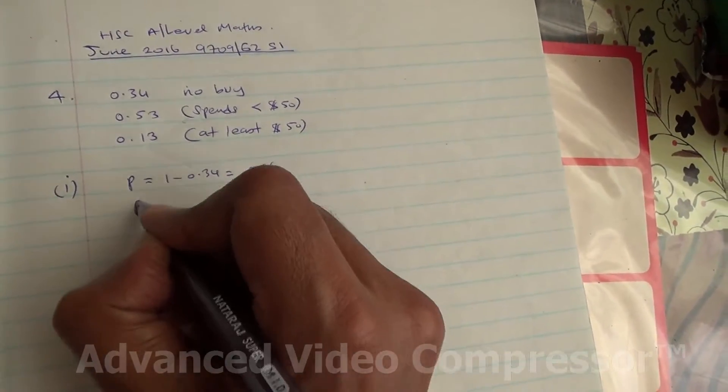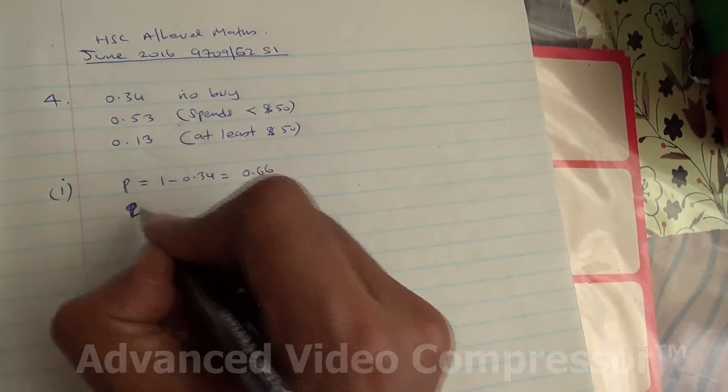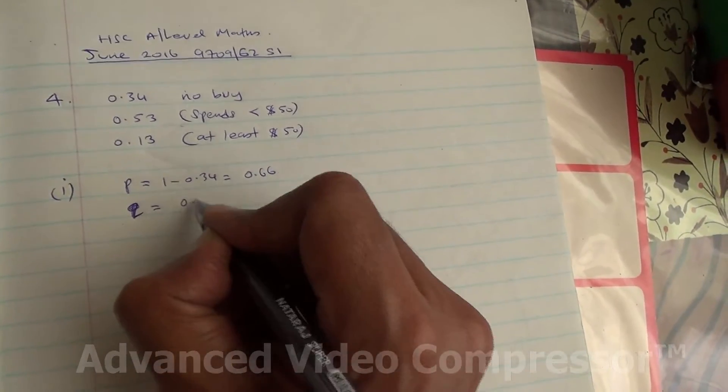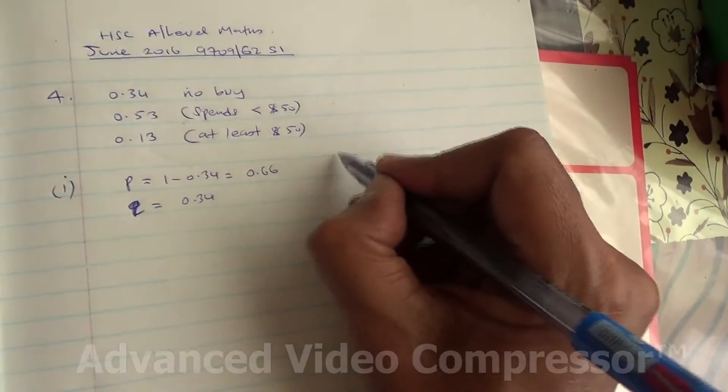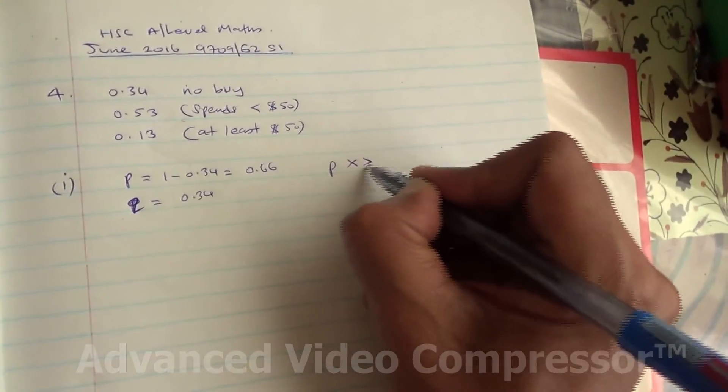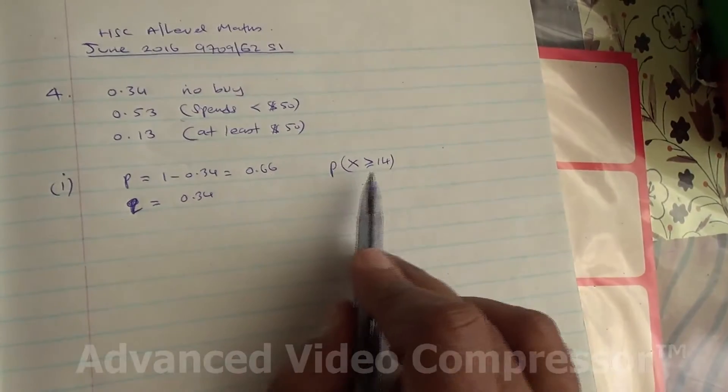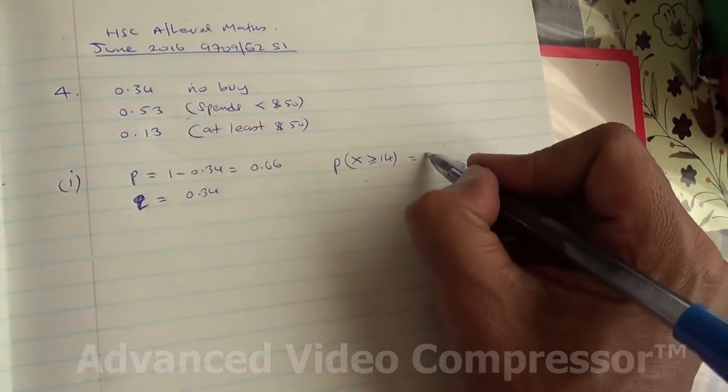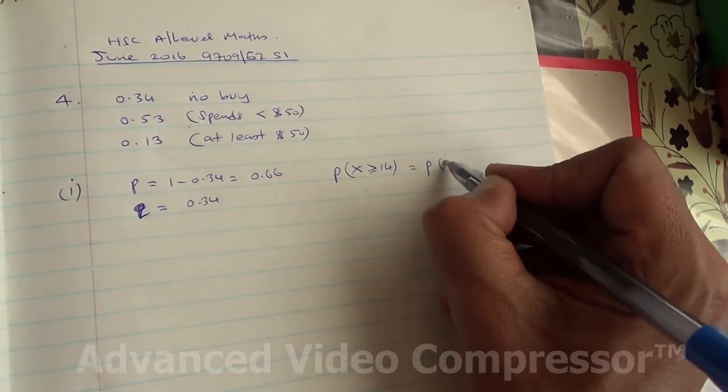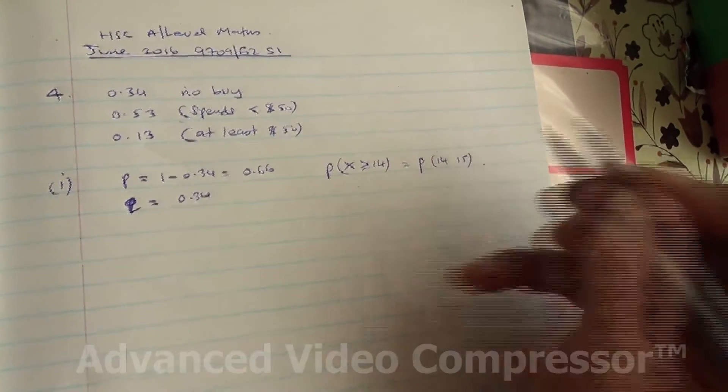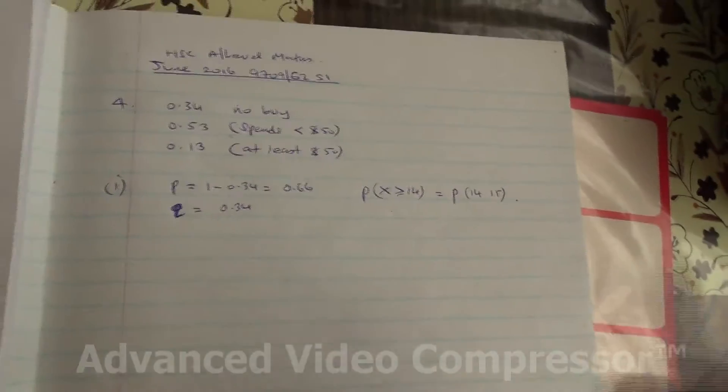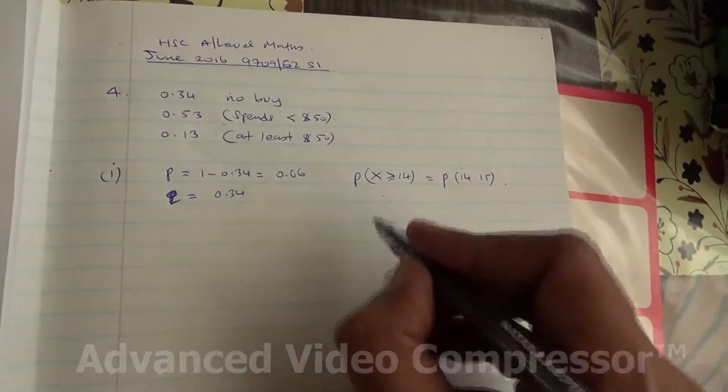Probability of not buying, so this is our Q failure, is going to be 0.34. Therefore, we need to find the probability that at least 14 of them is going to buy something. At least 14 means probability of X being 14 and 15. This is a binomial distribution.